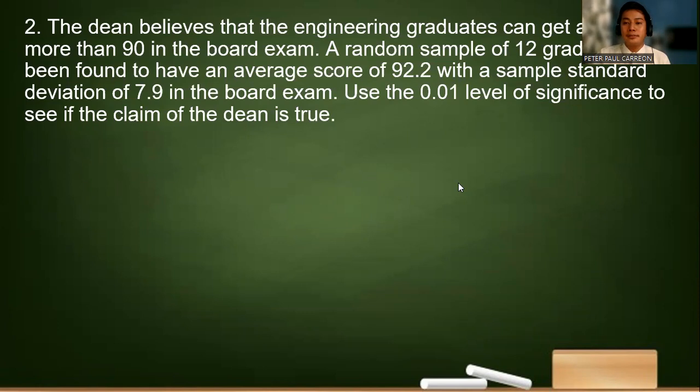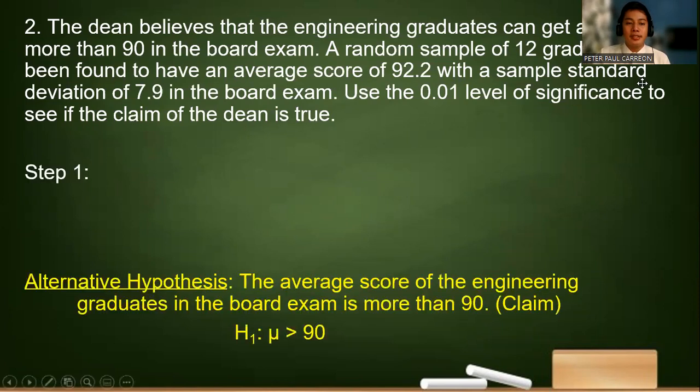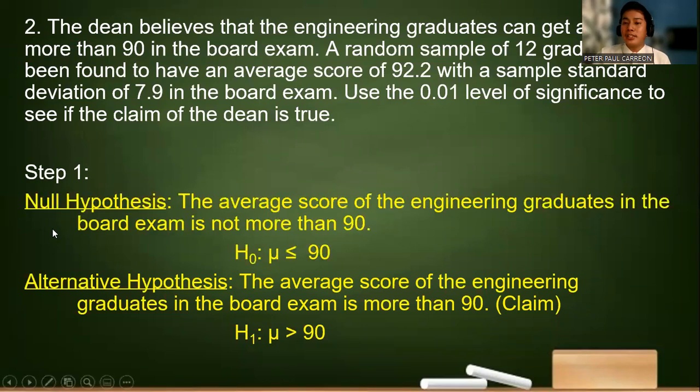Step one. The alternative hypothesis is the average score of the engineering graduates in the board exam is more than 90. That is our claim. We use greater than because of the word more than here, which makes it directional. You can now write a null hypothesis. The average score of the engineering graduates in the board exam is not more than 90. So a not more than symbol would mean less than or equal to 90.